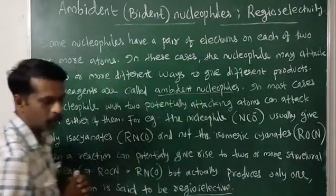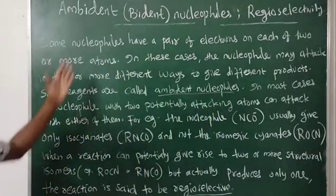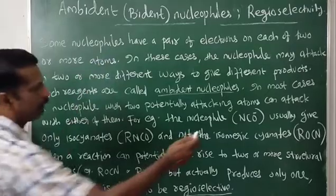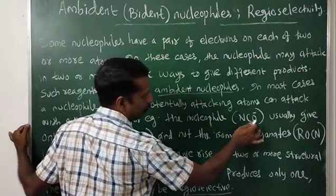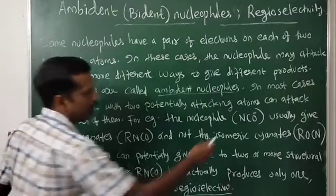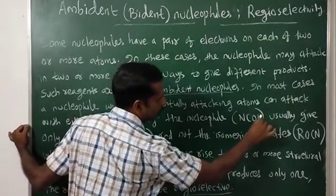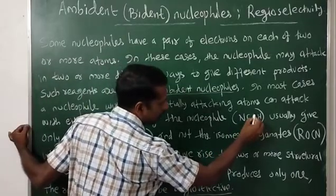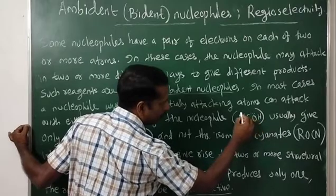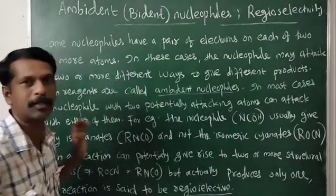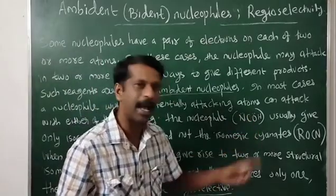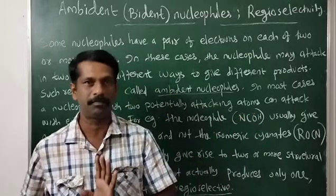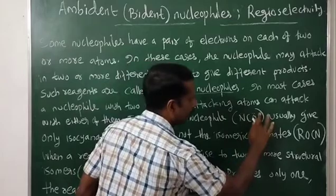Such reagents are called ambident nucleophiles. For example, consider NCO⁻. In NCOH, you can see that the oxygen atom has a pair of electrons and the nitrogen atom also has a pair of electrons. That means this nucleophile can attack a substrate molecule using either the oxygen atom or the nitrogen atom.